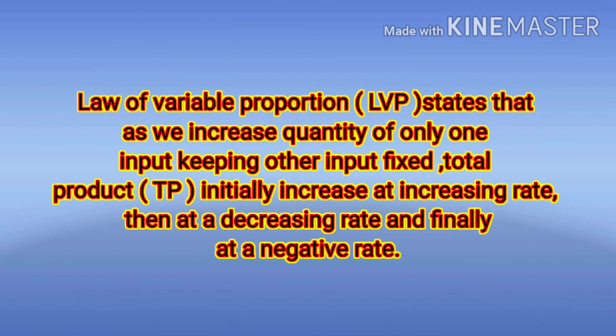When one labor was working, suppose ten units of production were happening. We increased from one to two workers — division of work occurs, efficiency increases, so production increases at an increasing rate initially. Then going from two to three, three to four, production increases but at a decreasing rate. Finally, when more labor is added, instead of increasing production, it actually decreases. This is the Law of Variable Proportions.